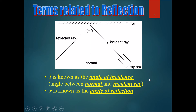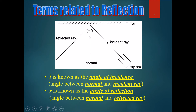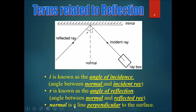R is the angle of reflection, which is the angle between the normal and the reflected ray. Similarly, don't mistake it for the angle between the reflected ray and the mirror. The normal is a line perpendicular to the surface of the mirror — if the mirror is straight, the normal is the line at 90 degrees from it.